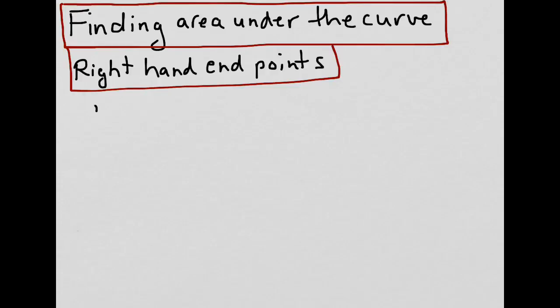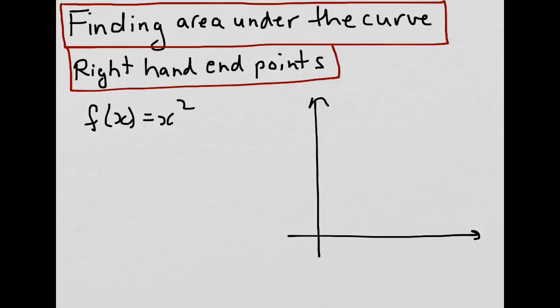Let's say we had a function f equals x squared, which we can graph on a grid. We were interested in finding the area under the curve, and the area we want to find is over the interval 0 to 1.